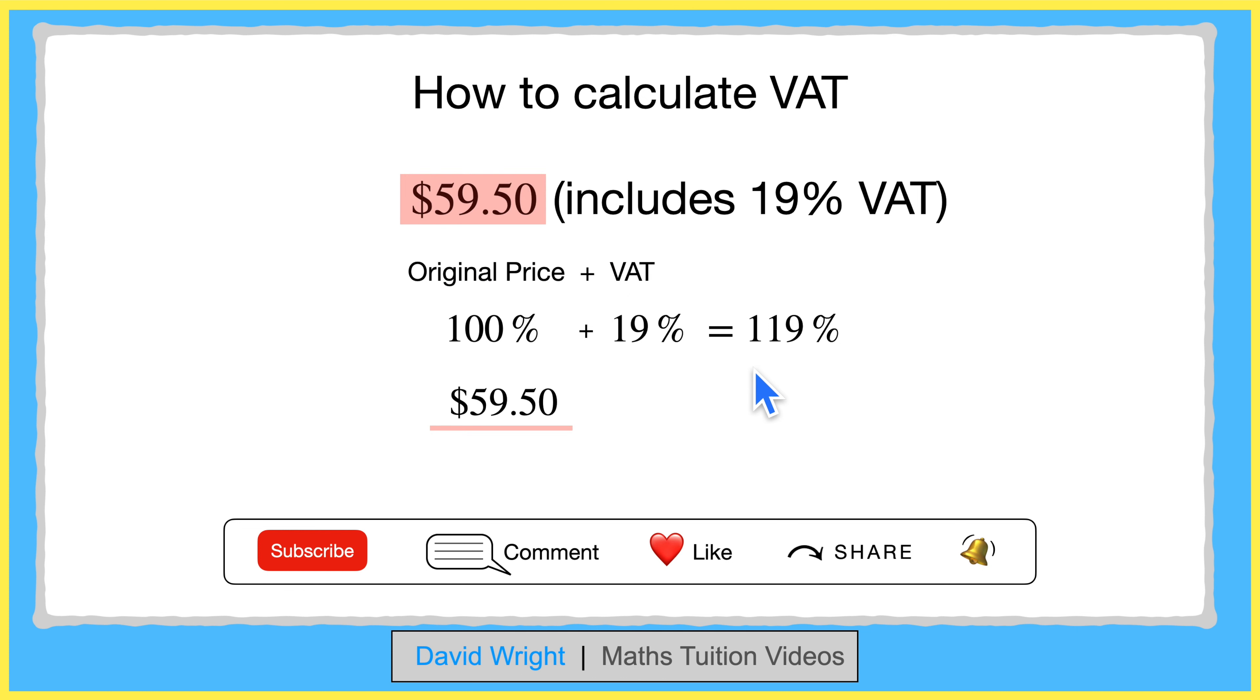So if we take the price of $59.50 and divide this by 119, we get the value of 1%, which is 0.5.